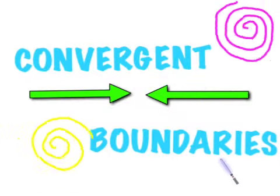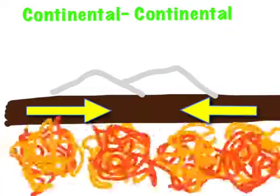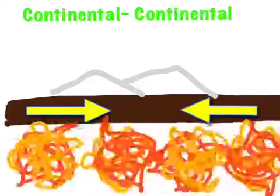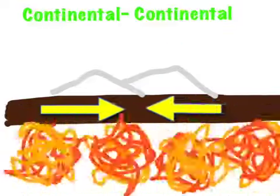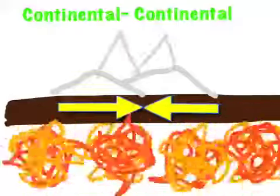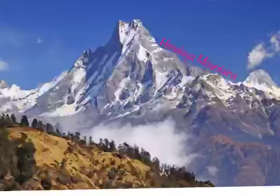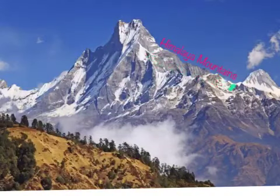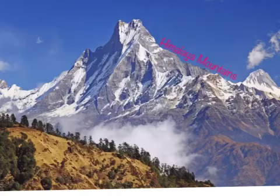Continental-Continental Collision is when two continental plates move towards each other until they collide. This creates mountains and earthquakes. The Himalaya Mountains are formed from Continental-Continental Collision.